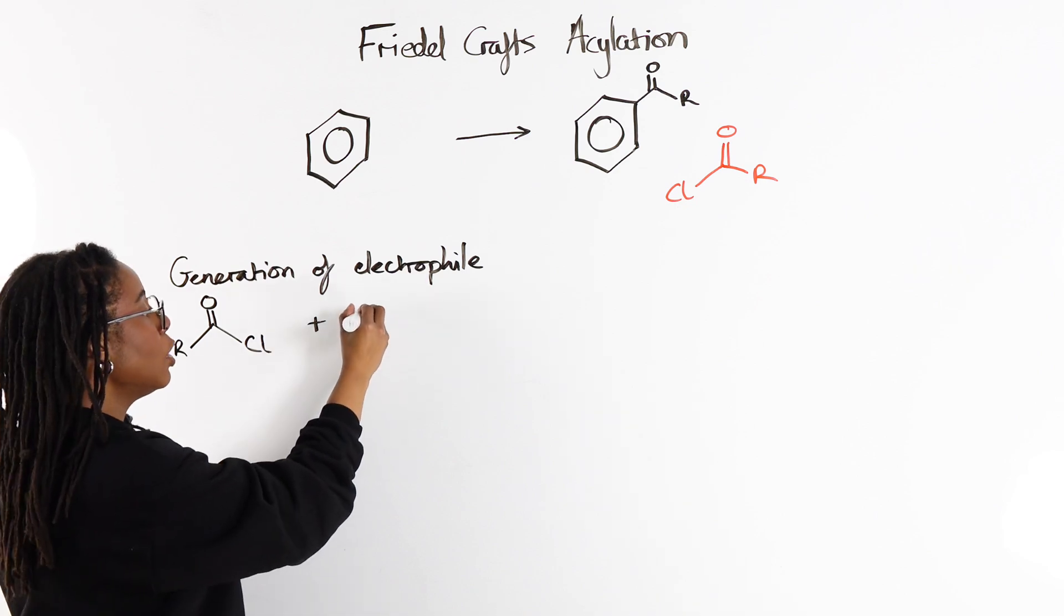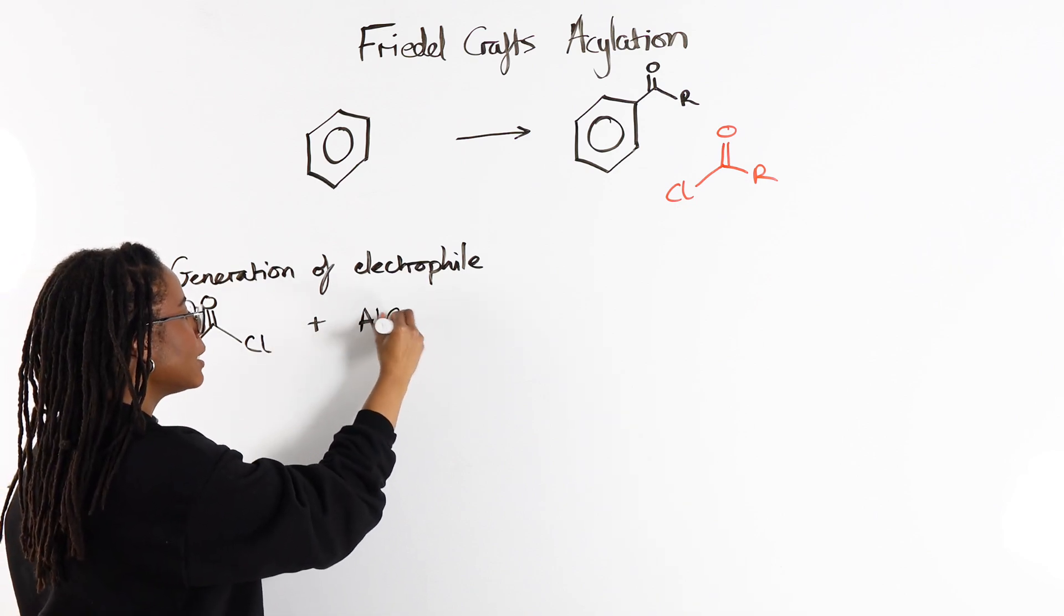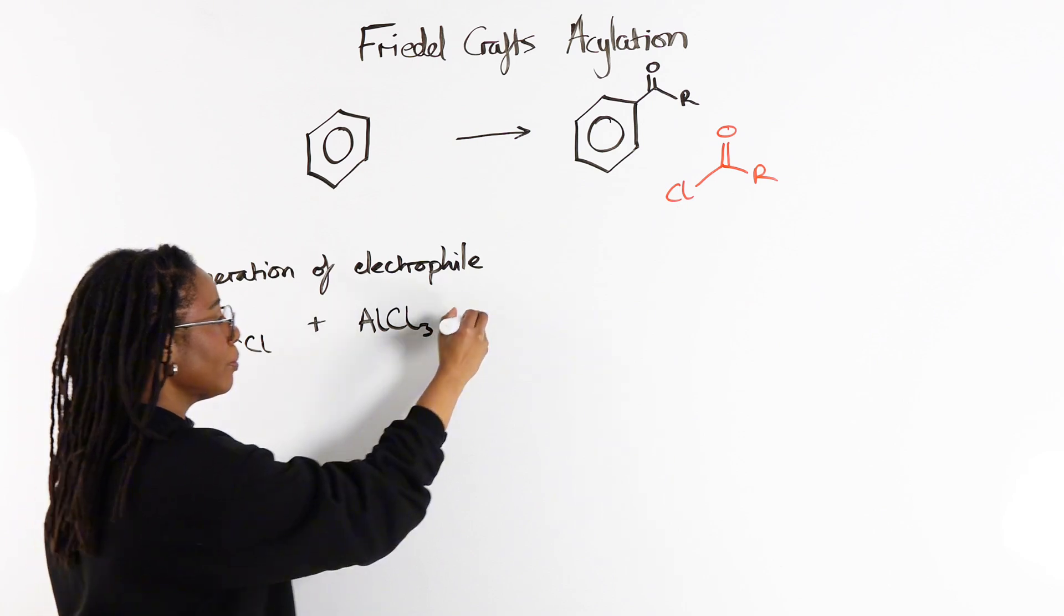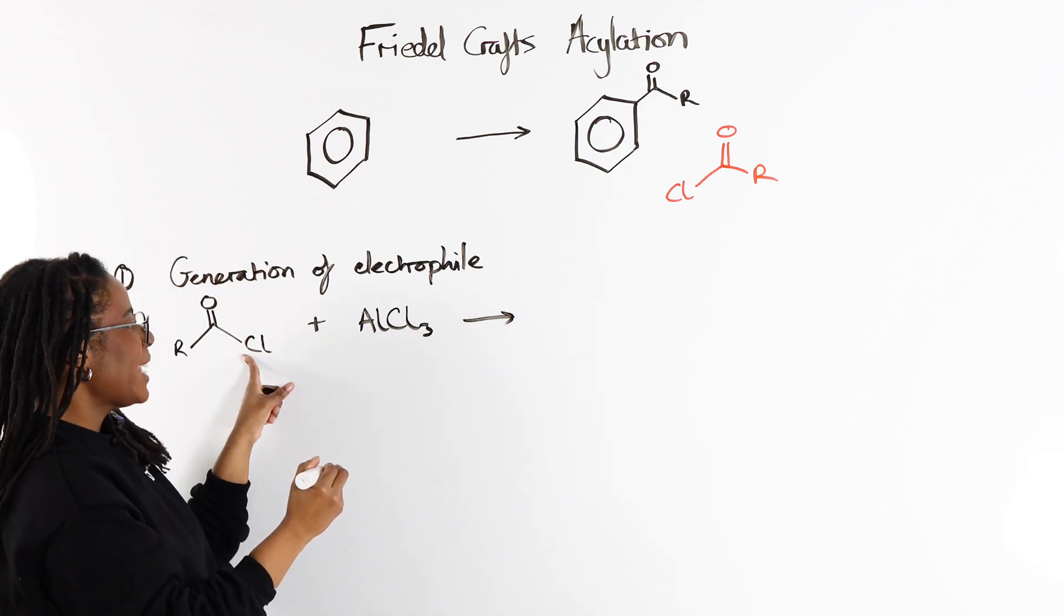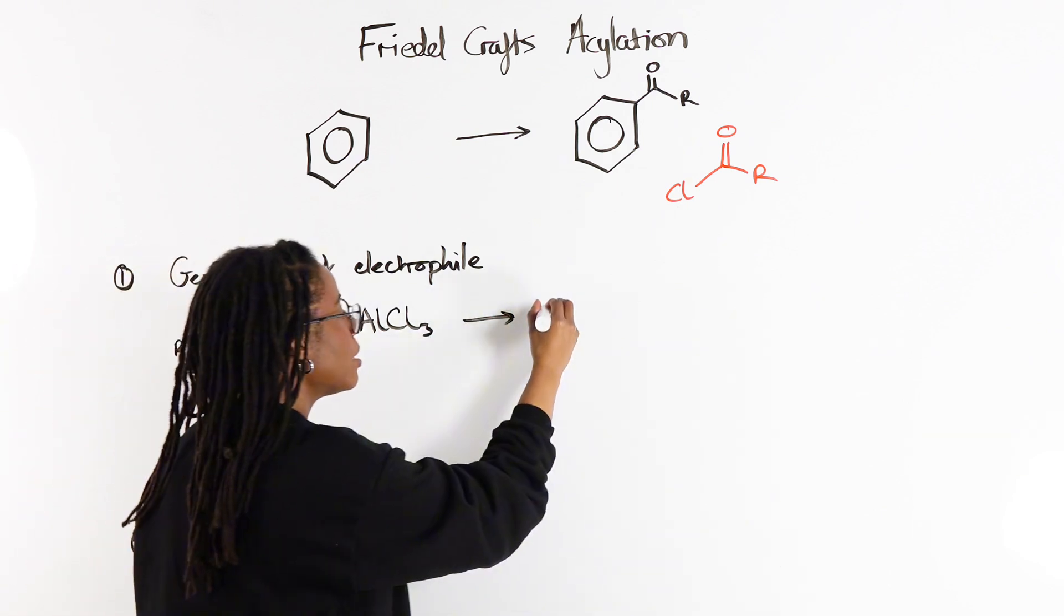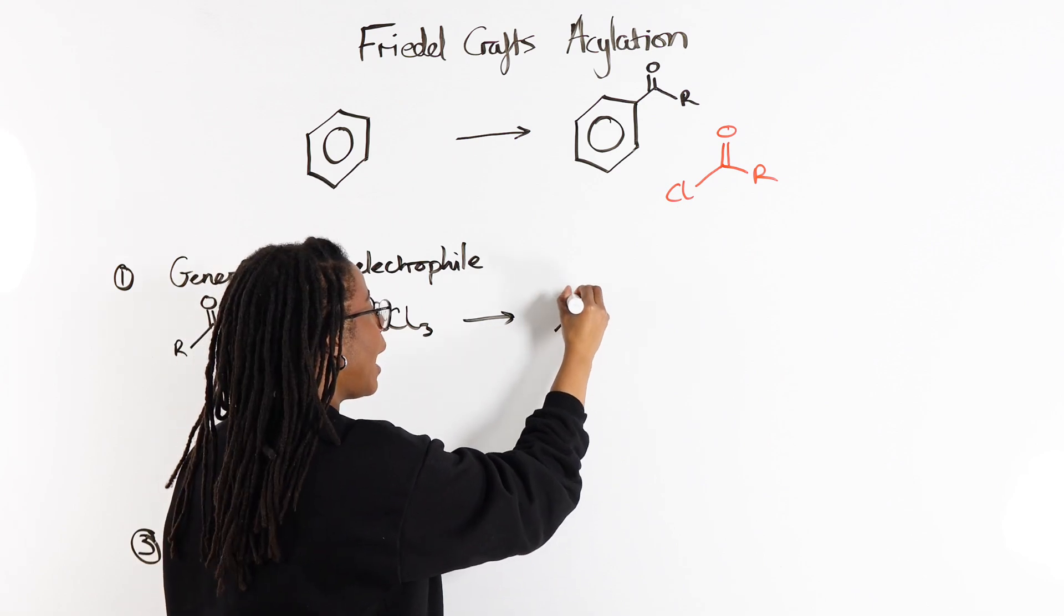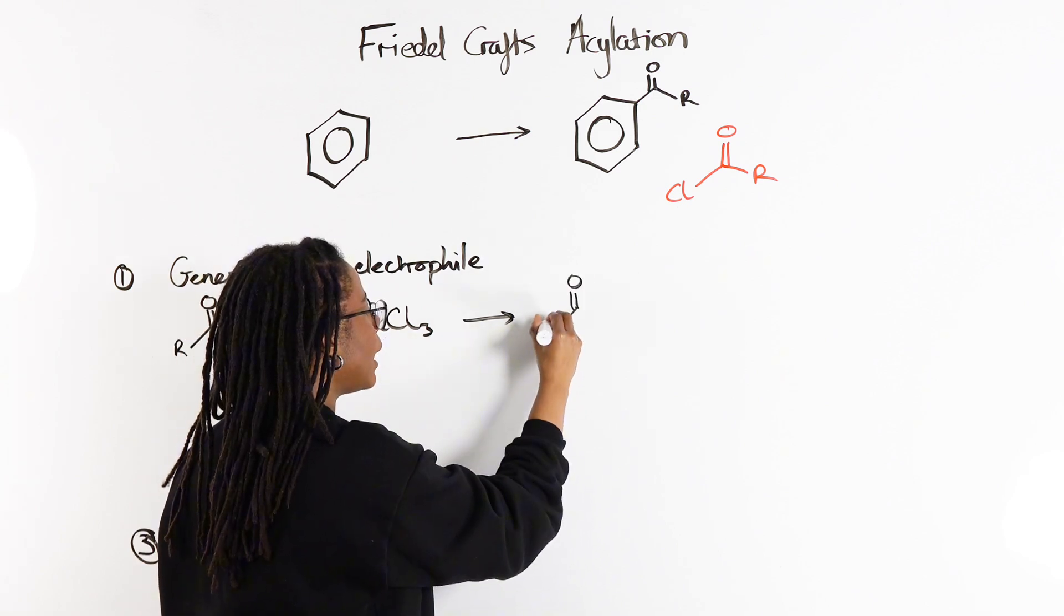Because we've got Cl, we're going to use AlCl3. This AlCl3 takes the Cl as Cl minus. So we end up with our positively charged electrophile.